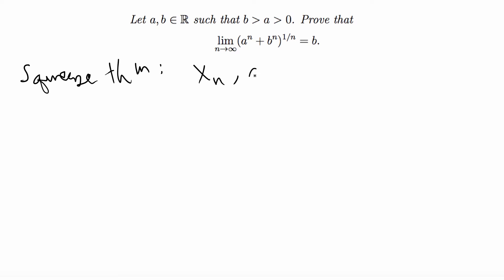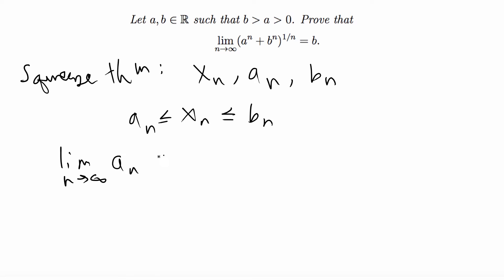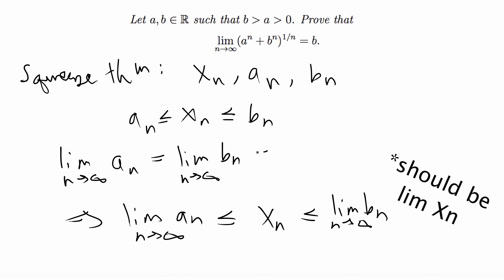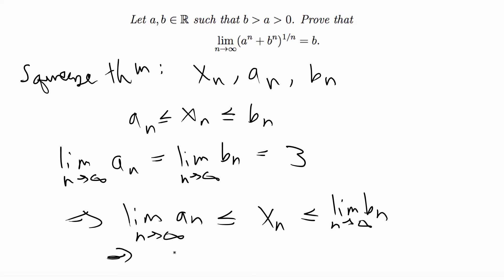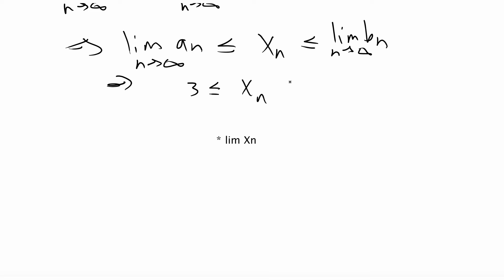The squeeze theorem says that if you have sequences x_n, a_n, and b_n such that a_n ≤ x_n ≤ b_n, and you know that the limit as n goes to infinity of a_n equals the limit of b_n as n goes to infinity, then you can take the limit of all three sequences. For example if that limit equals 3, then you'd have 3 ≤ x_n ≤ 3, which means x_n must equal 3.